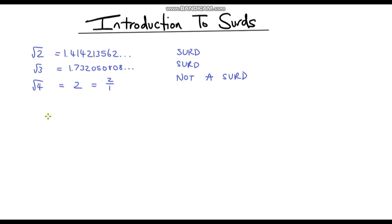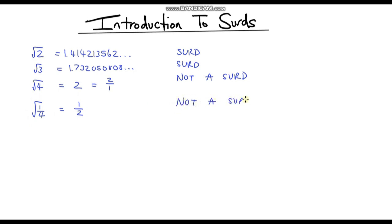What about the square root of one quarter? Think about whether there are two numbers that multiply together to get a quarter. Well, yes — a half. You could type this into a calculator and it gives you the answer of a half, because a half times a half is a quarter. So this is also not a surd. We can simplify the square root of a quarter to a half.